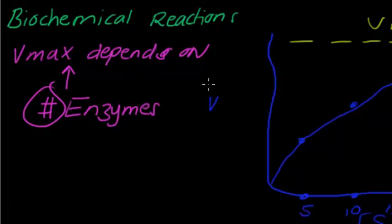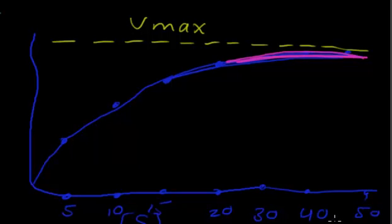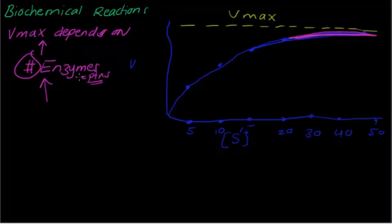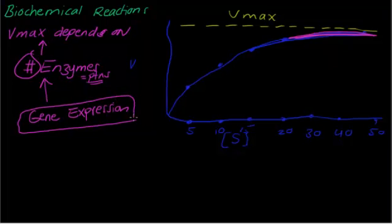Can you increase the Vmax if you increase the substrate concentrations? The answer is no — you can increase the substrate to 20, 30, 40, 50 but the Vmax will remain the same. We can increase the level of Vmax only by increasing the number of enzymes. Since enzymes are proteins, you must go inside the cell nucleus, to the genes and DNA, and increase the gene expression to stimulate the cell to synthesize more enzymes.